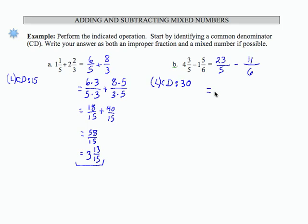I'm going to take the step where I write each fraction as an equivalent fraction over the common denominator. So in the first fraction, I'm going to need 5 times 6 to give me 30. That means I have 23 times 6 in the numerator. In the denominator, I need 6 times 5 to give me 30, which means I need 11 times 5 in the numerator.